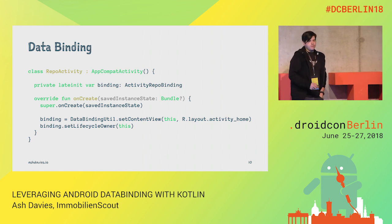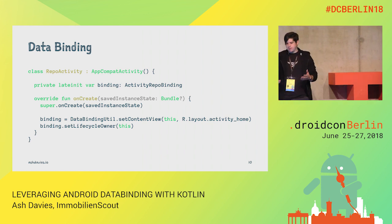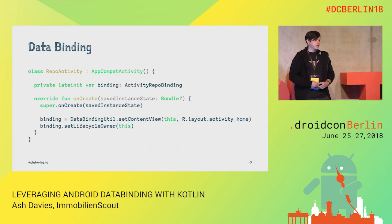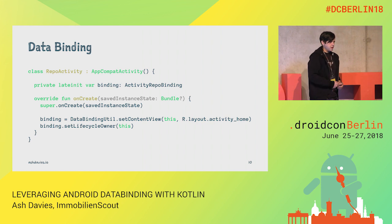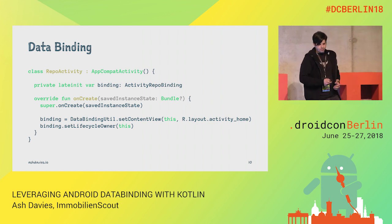So this is already pretty basic. How can we use Kotlin to improve this? Let's start with the binding.